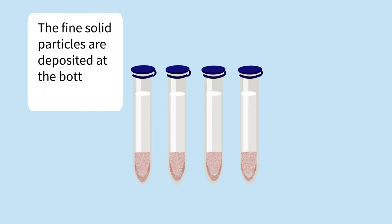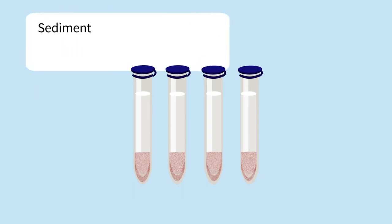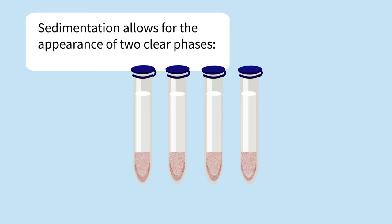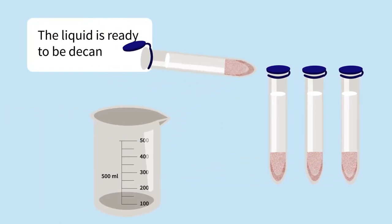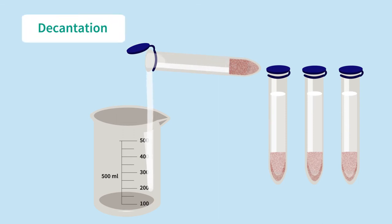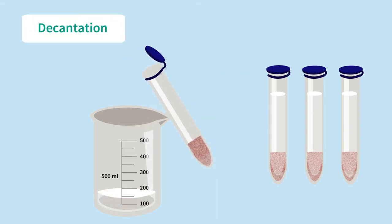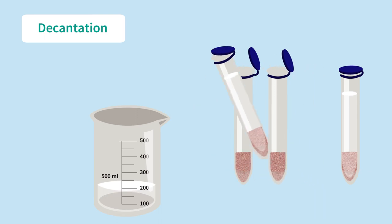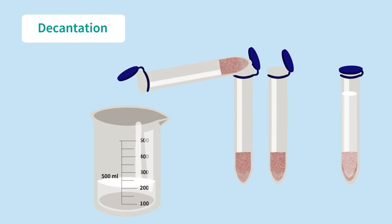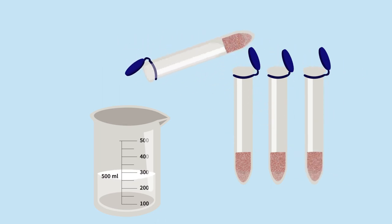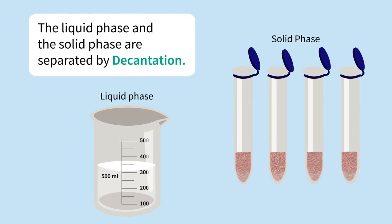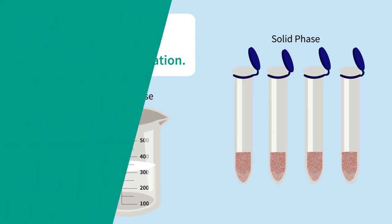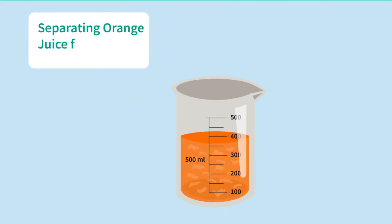The fine solid particles are deposited at the bottom of the tubes. Sedimentation allows for the appearance of two clear phases: the liquid phase and the solid phase, or sediment. The liquid phase and the solid phase are then separated by decantation.